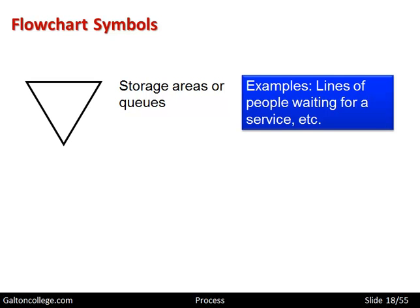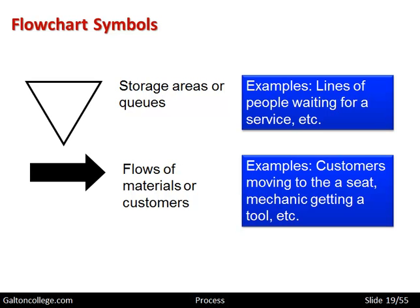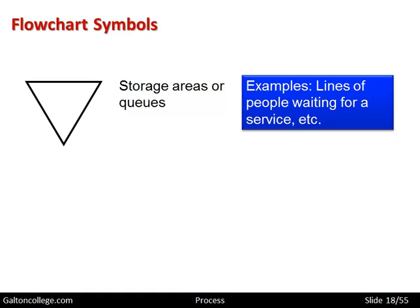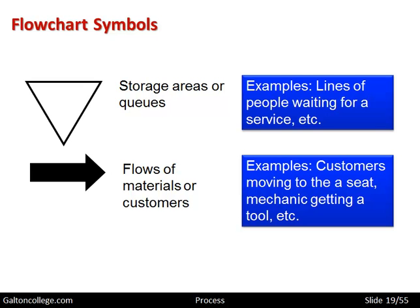A triangle tipped on its apex is a storage area or queue — for example, lines of people waiting for service. And then we have the flow of materials or customers, which is represented by a big black arrow. Customers moving to a seat in the cinema — that's a flow of people. It could also be a mechanic getting the right tool. So in our case here, we've just got four symbols: tasks, decision points, storage areas, and flows of materials or customers.